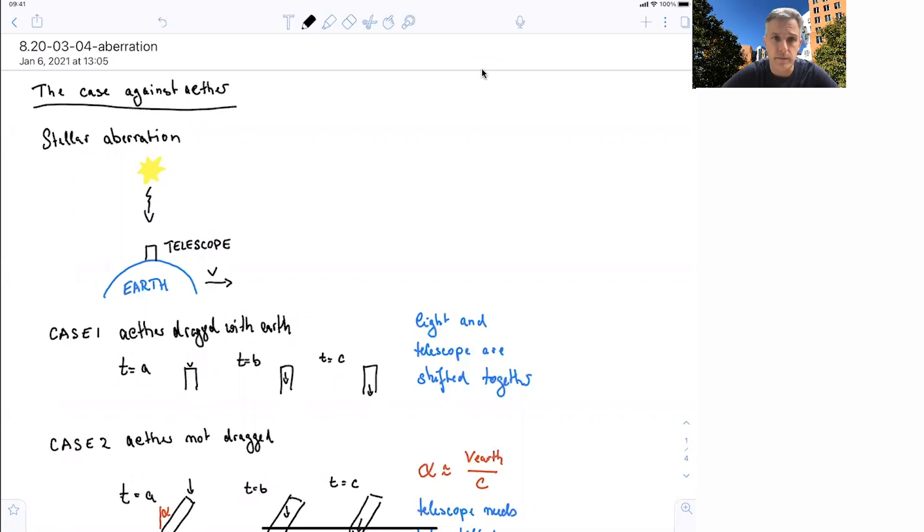The problem we have in mind here is one where we use a telescope to look at a distant star. When we do this, the effect of ether might change the way we have to orient our telescope. Let's have a look at this.